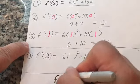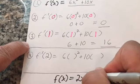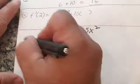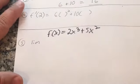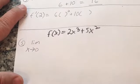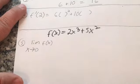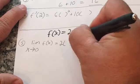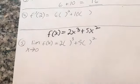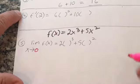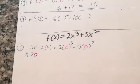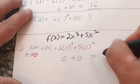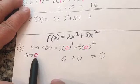Now we're going to go from taking derivatives to taking limits, using the same function f of x equals 2x cubed plus 5x squared. Number five: find the limit as x approaches zero of f of x. I take zero and plug it into f of x: 2 times zero cubed plus 5 times zero squared. Zero cubed is zero and zero squared is zero, so that gives zero plus zero. The limit as x approaches zero of f of x equals zero.